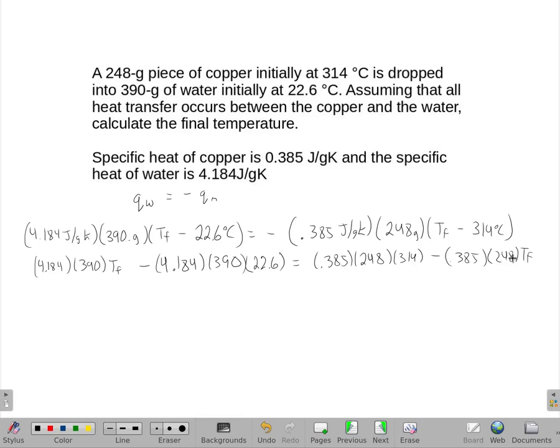All right, and now what I'm going to do is rearrange it. So both terms with Tf are on one side, and everything else is on the other. So I'm going to move this negative over here, and I'm going to move this negative over here. So I'll have 4.184 times 390 times Tf plus 0.385 times 248 times Tf. So all I did there was I moved this down, and I moved this one to the left, which is why it became positive.